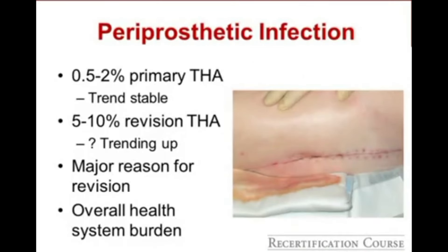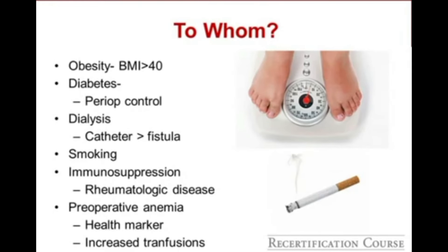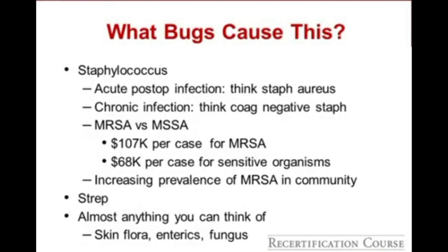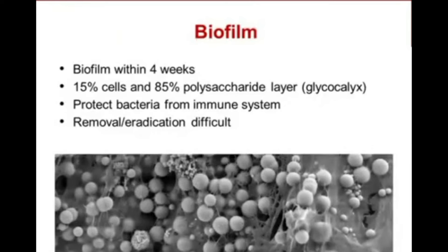Periprosthetic joint infection risk factors include obesity, diabetes, and others. Staphylococcus is the most common culprit. In acute postoperative infection, think Staph aureus; for chronic long-standing infection, think coag-negative Staph. Biofilm on the implant forms within four weeks and protects bacteria from the immune system and antibiotics. This is why established periprosthetic infections often require implant removal. Infection types include early postoperative (within the first month), acute hematogenous in a well-functioning hip, and late chronic periprosthetic infection.